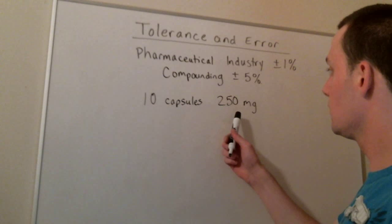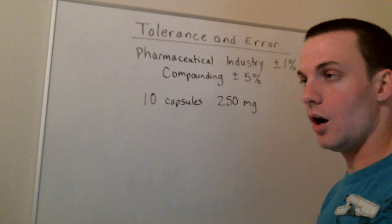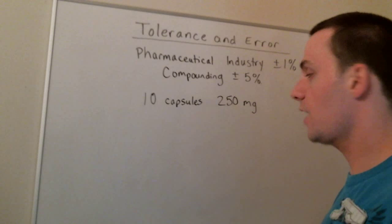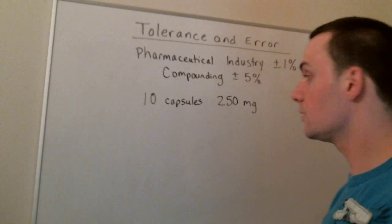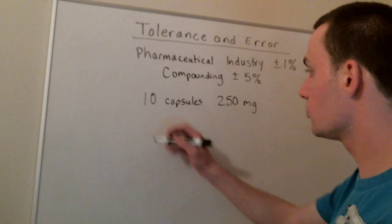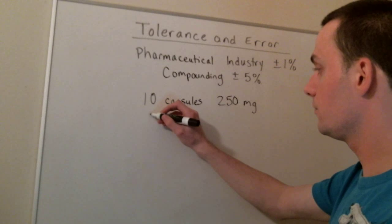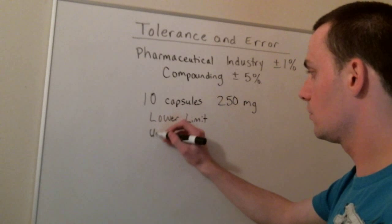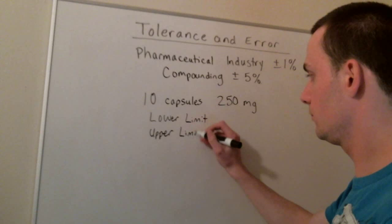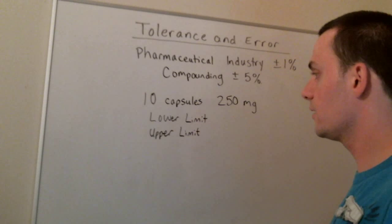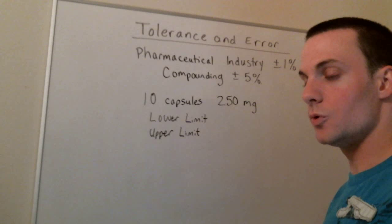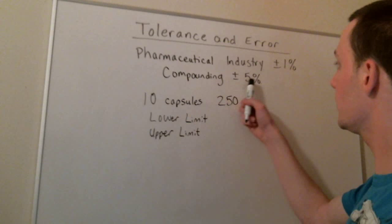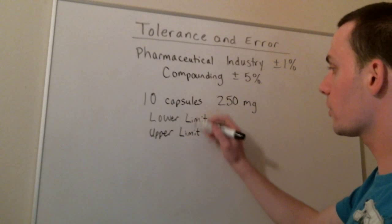What is an acceptable range of weights that can be put into our capsules so the capsules are still acceptable for dispensing to patients? We're looking for a range with a lower limit and an upper limit. If our capsule has a powder weight that falls between these limits, then it's acceptable. Compounding has a 5% error, so to figure out our upper and lower limits, we first need to find 5% of our target.